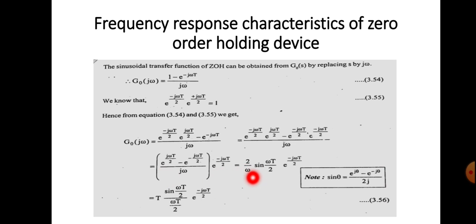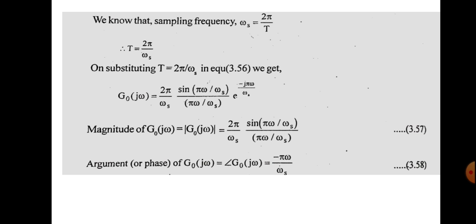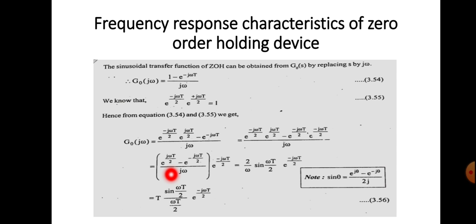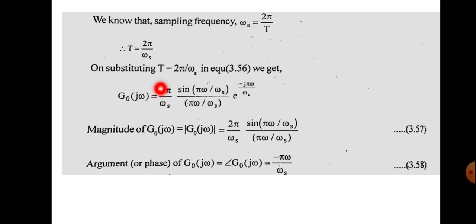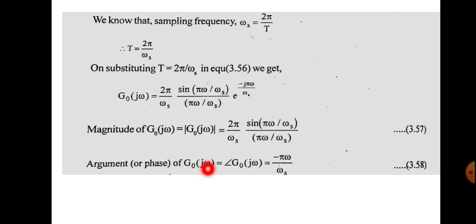Introducing T in the numerator and denominator, the relation includes the term ωT/2. Since sampling frequency ωs = 2π/T, we can substitute T = 2π/ωs, so the equation becomes G₀(jω) = (2π/ωs) · [sin(ωT/2)/(ωT/2)] · e^(-jωT/2). The magnitude of G₀(jω) is (2π/ωs) · |sin(ωπ/ωs)/(ωπ/ωs)|, and the phase equals -πω/ωs.